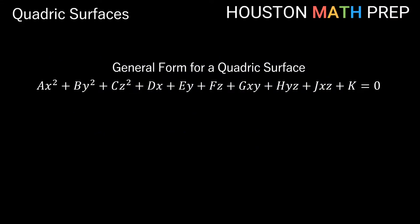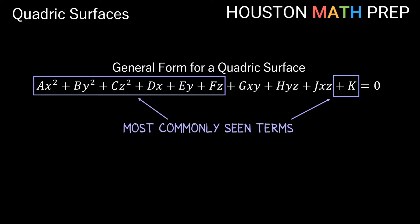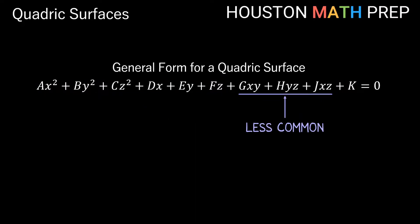Here's the general form equation for a quadric surface — if your equation fits the format where all of its terms are listed here, we consider it a quadric surface. When you first encounter quadric surfaces, you'll most commonly see the quadratic terms, possibly some linear terms of x, y, and z, and a constant. The combo xy, yz, and xz terms are occasionally seen, but perhaps less common when first getting the hang of basic quadric surfaces.